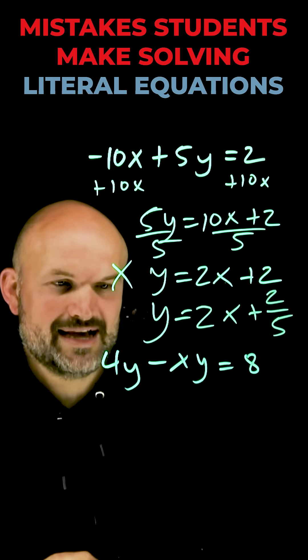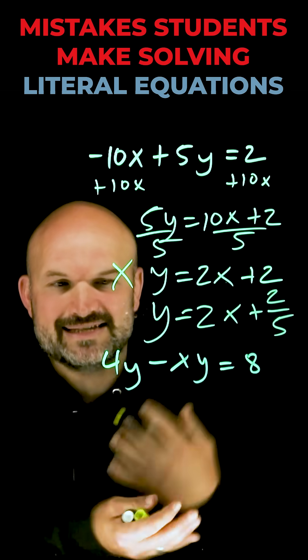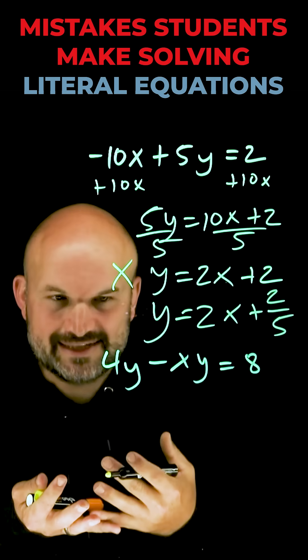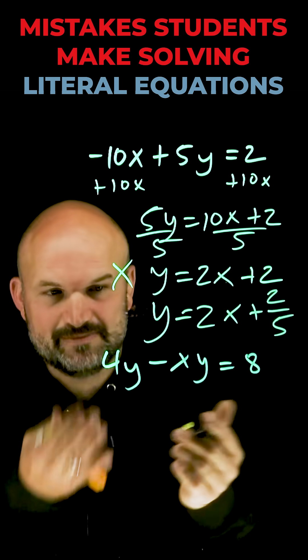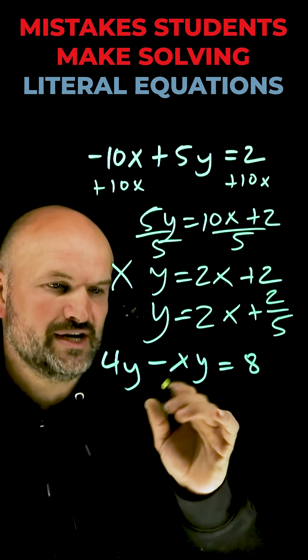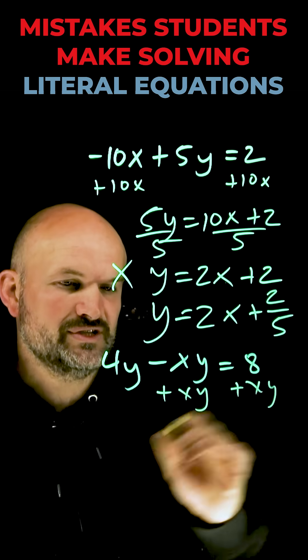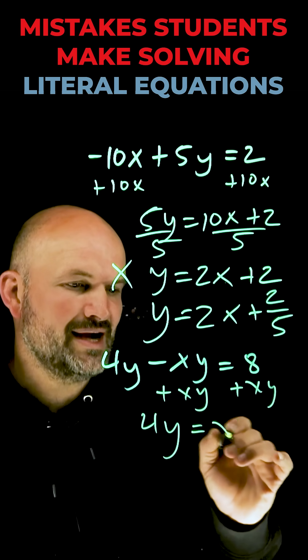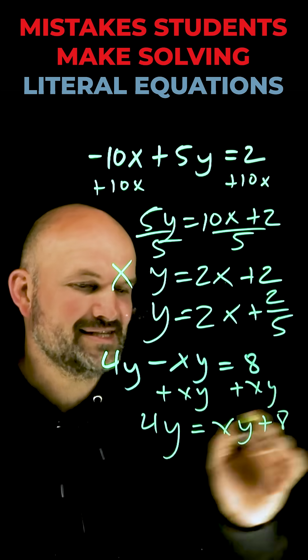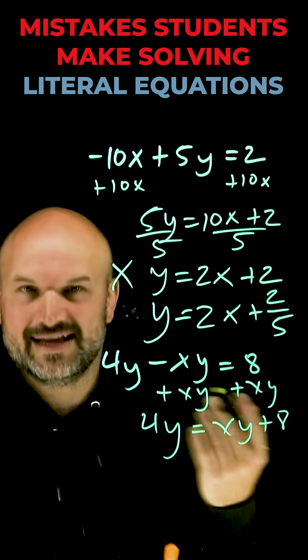Now the next mistake gets students confused all the time because they see two different y's and typically they're like well we can combine these, but unfortunately we can't combine these because they're not like terms. So what students will try to do is say well let me just get this xy over to the other side so then I have 4y equals xy plus 8 and then I can divide by 4 on both sides and solve it.